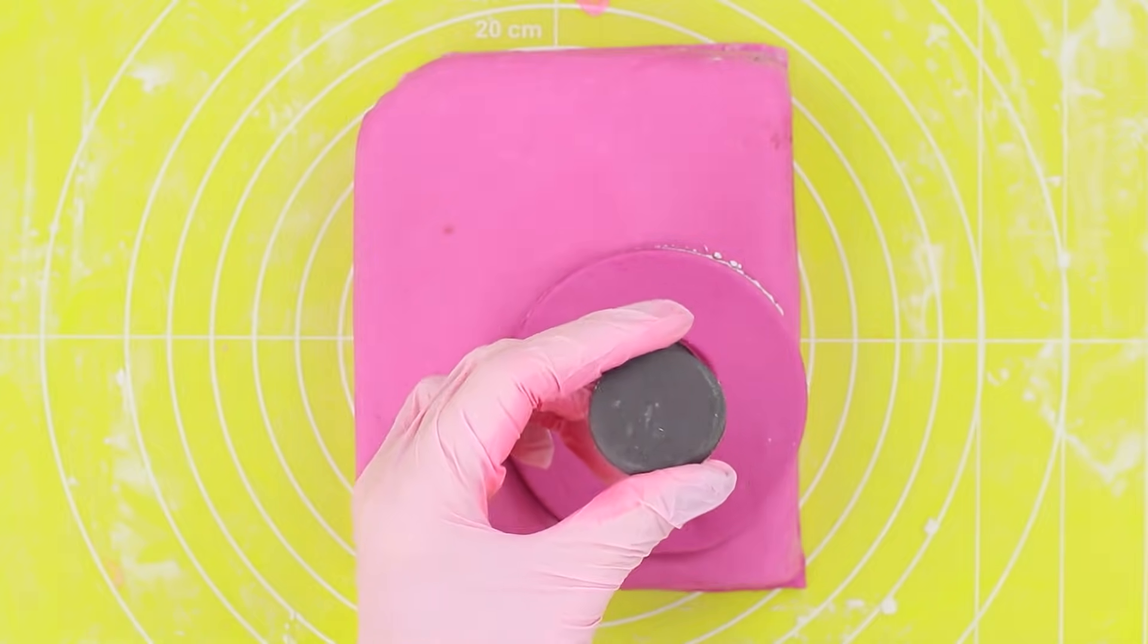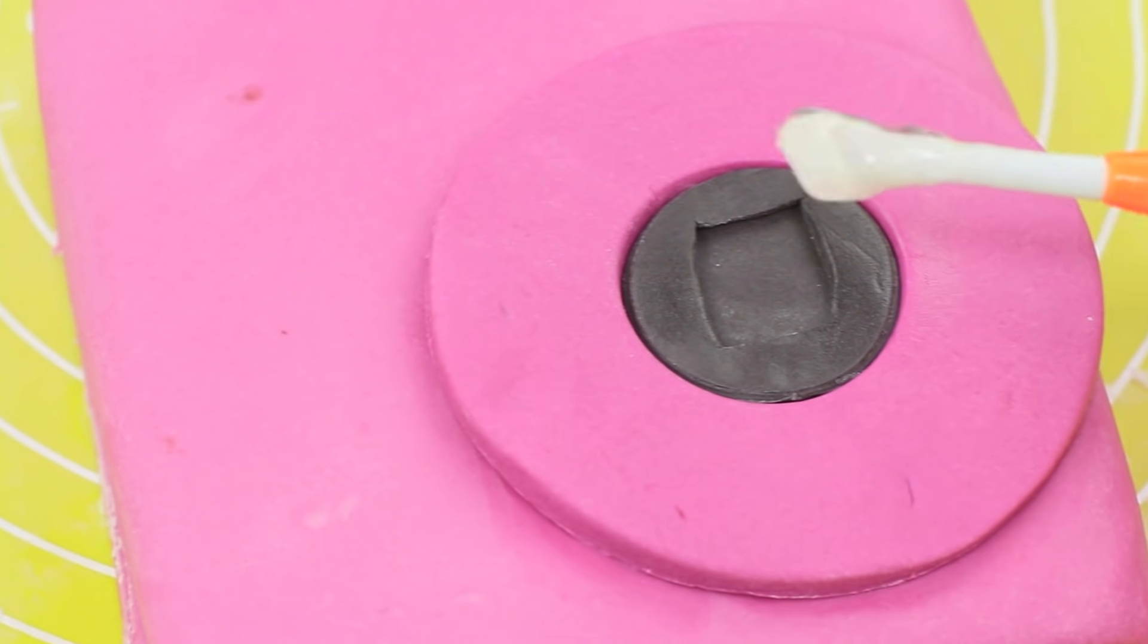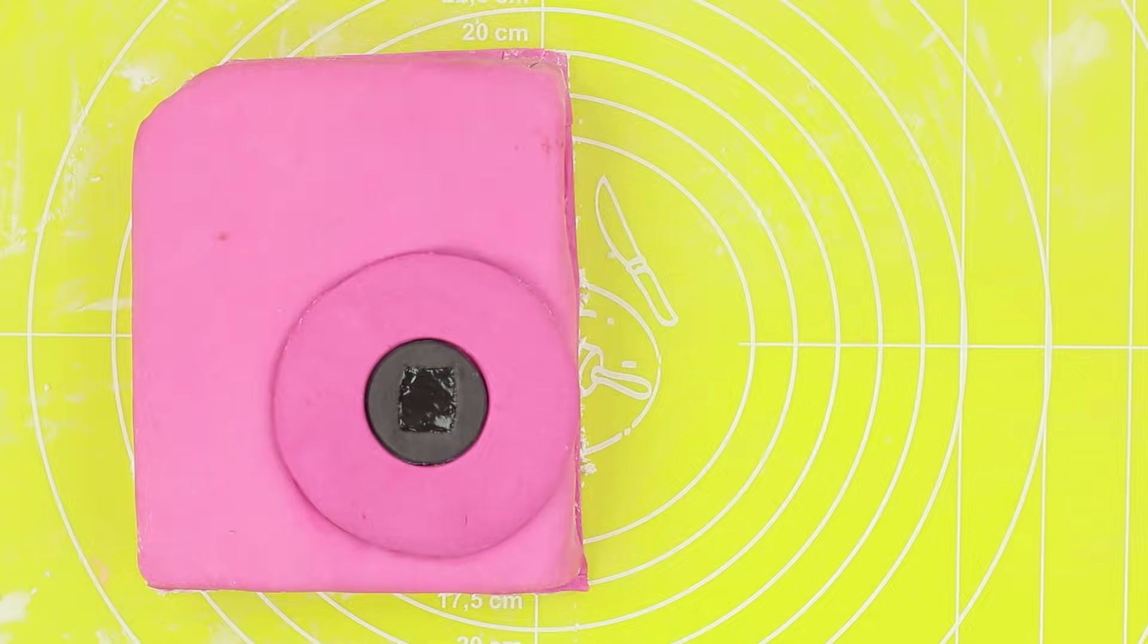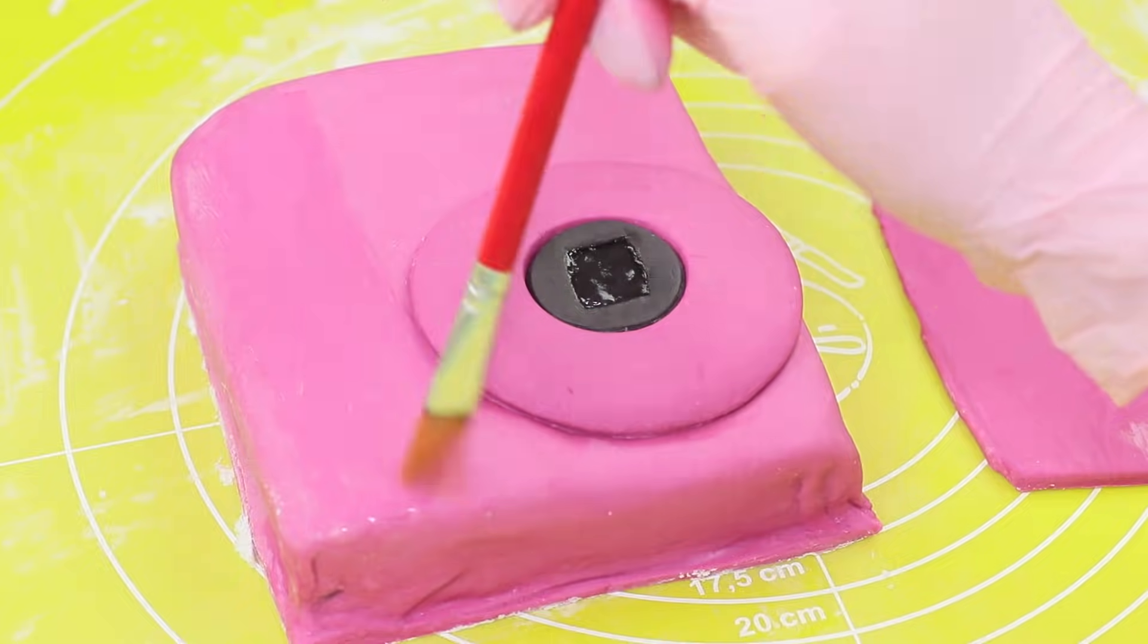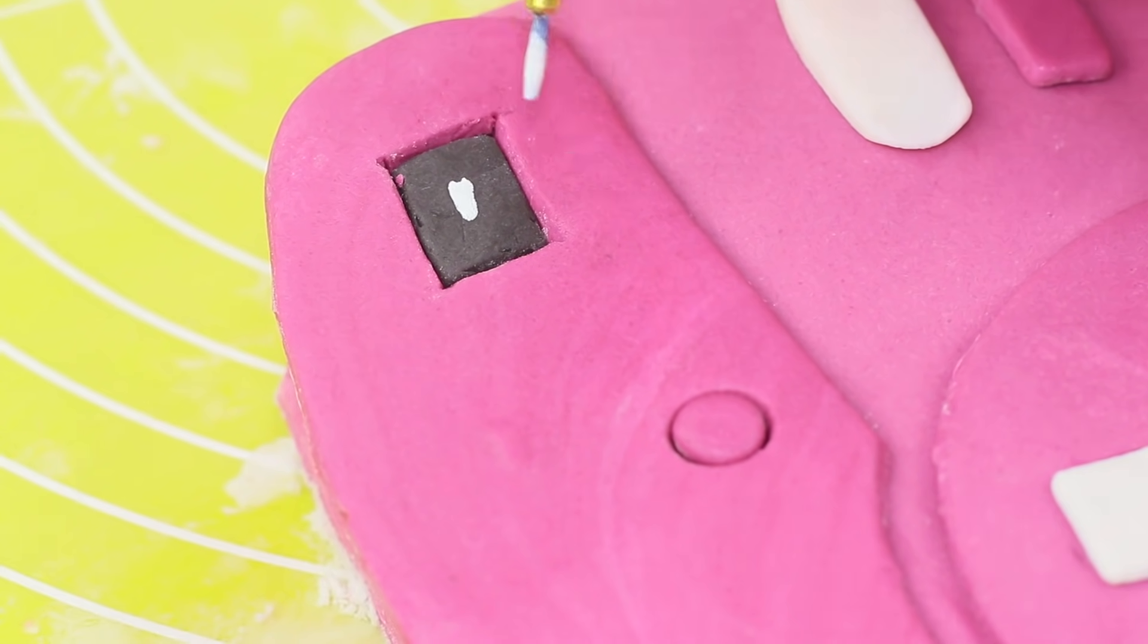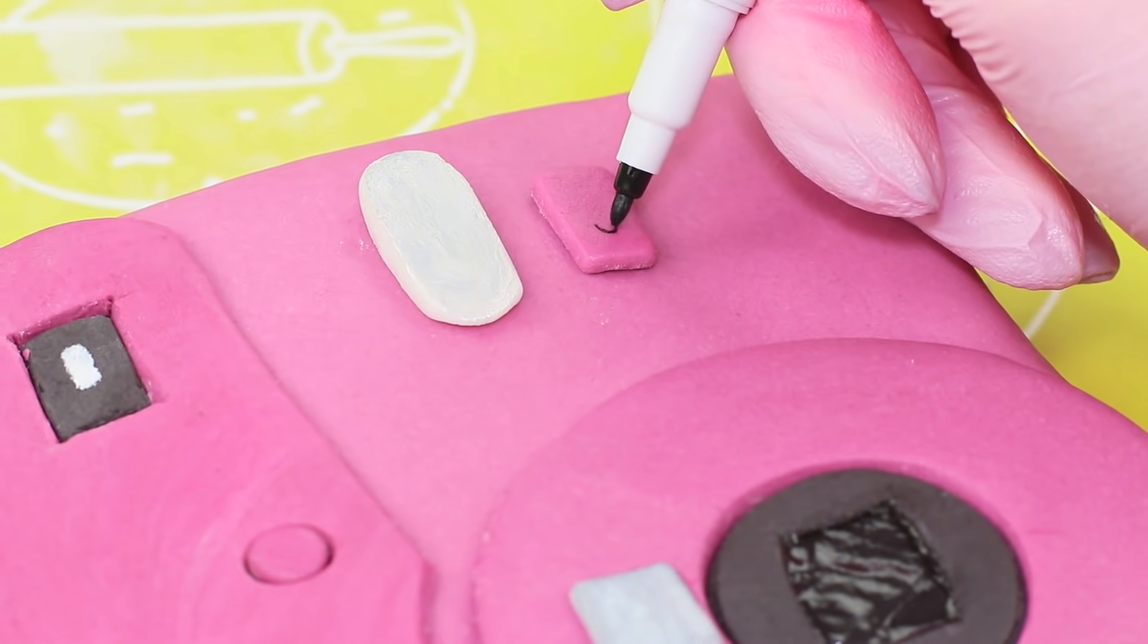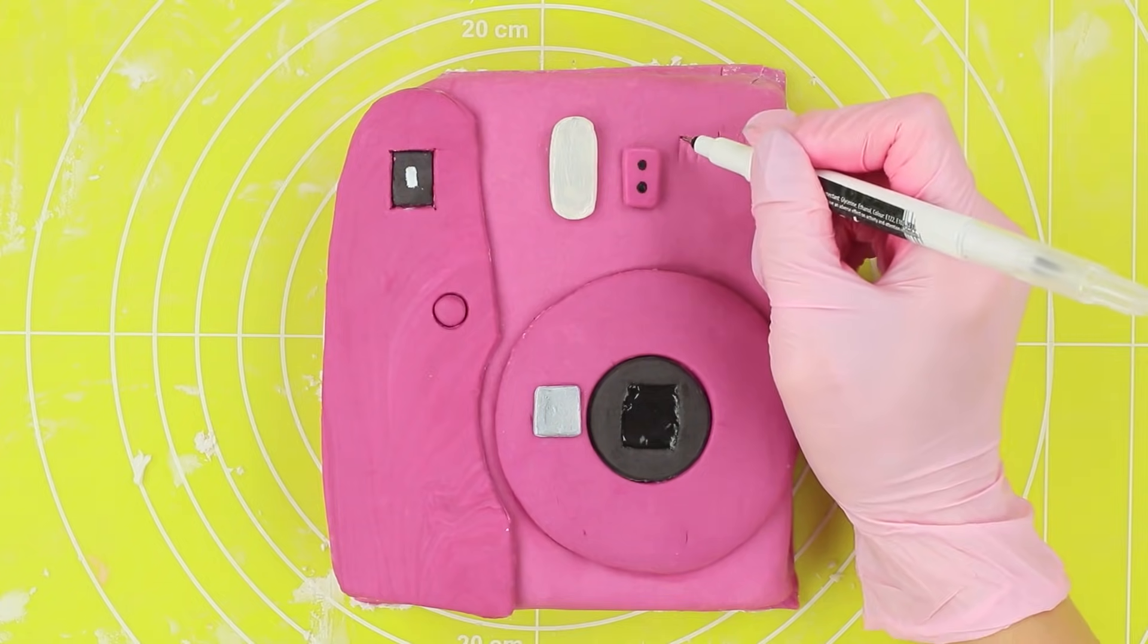Cut a square in the center of another black circle and attach it on top. Fill the hole with a clear glaze and polish it again. Cut the remaining details of the camera from fondant. Attach everything using edible glue. Add accents with food coloring. Define the flash with silver coloring. Make an imprint of a logo with a modeling tool and define it with a food marker.